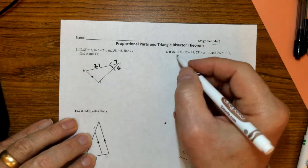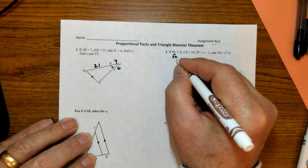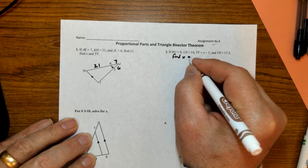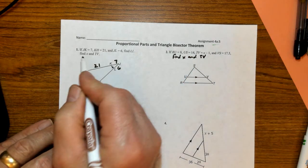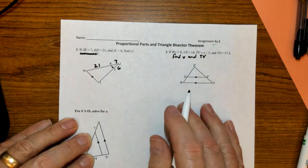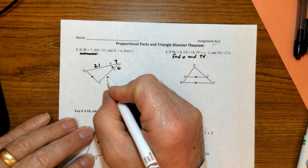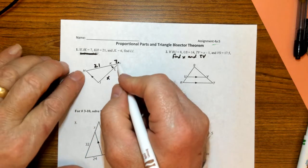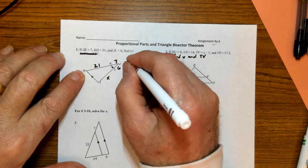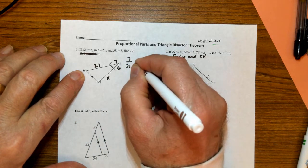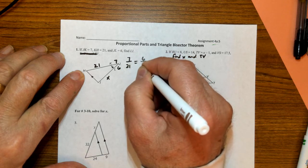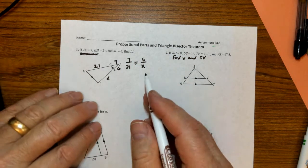Well, this is over here. They want us to find X over here. Find X and TV. So this goes with this problem. So we're just going to find the missing angle, LI. I'm going to call that X. So I'm going to set up my proportion. 7 is to 21 and 6 is to X. Do your cross product. Solve for X.